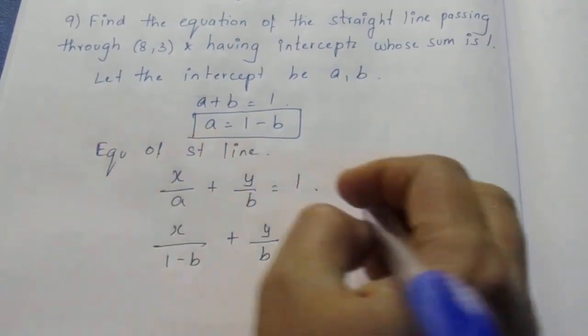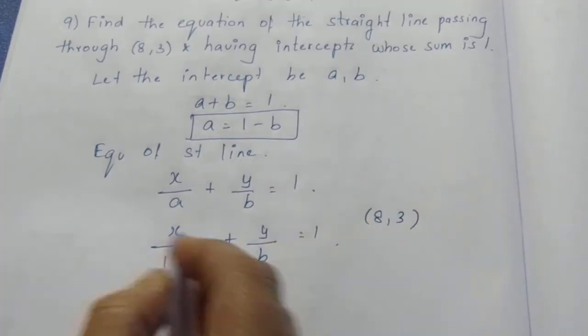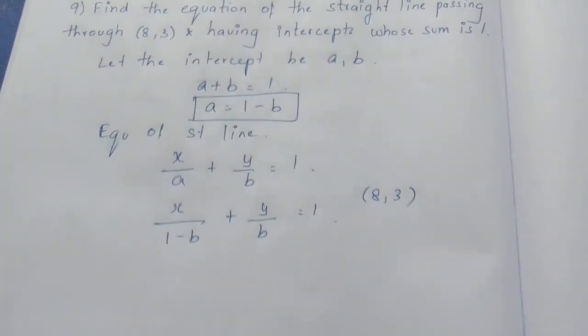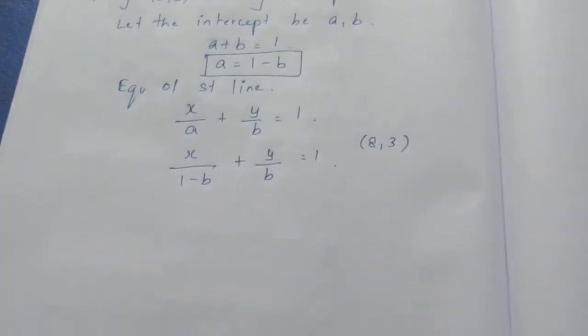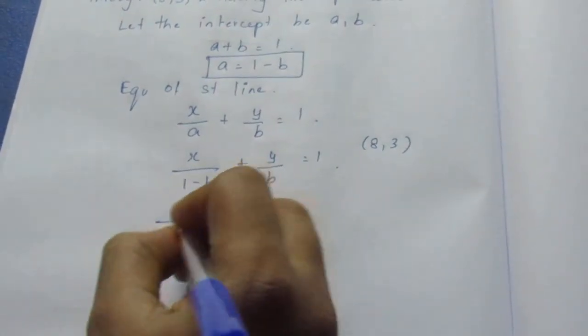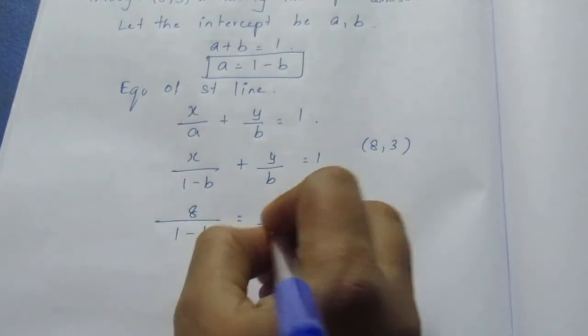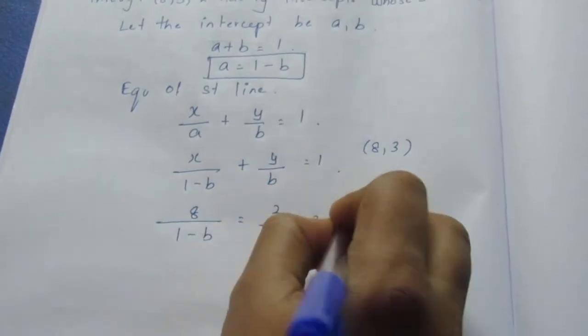This line passes through the point (8, 3). So substituting x equals 8 and y equals 3, we get 8 by (1 minus b) plus 3 by b equal to 1.